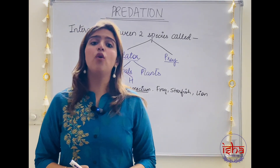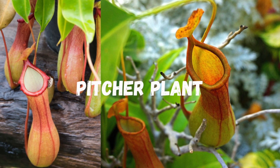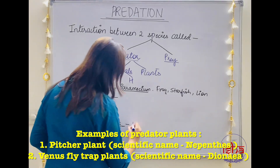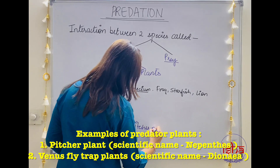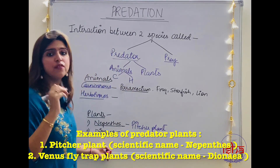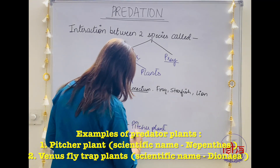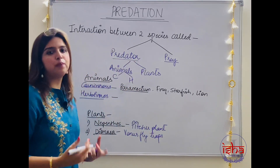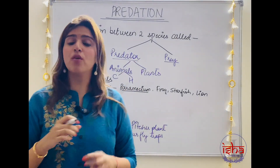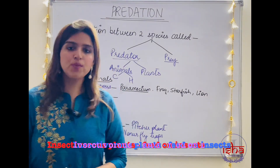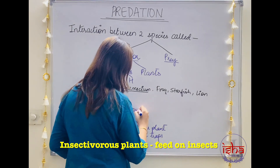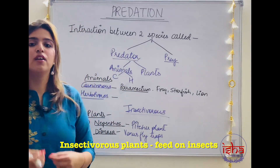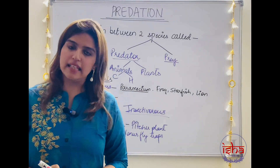Which plants are predators? We have all heard about the pitcher plant, and we've also heard about the Venus flytrap plant. The scientific name for the pitcher plant is Nepenthes, and the scientific name for the Venus flytrap plant is Dionaea. A specific term is used for these kinds of plants — they feed on insects and are called insectivorous plants. Those organisms that feed on insects are insectivores.